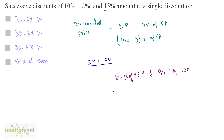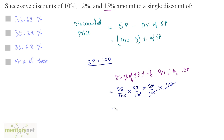So we can write this as (85/100) × (88/100) × (90/100) × 100. The 100s cancel out, and when you solve this, you get 67.32. So the discounted price is equal to 67.32.